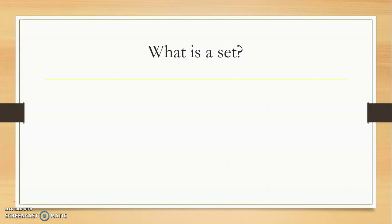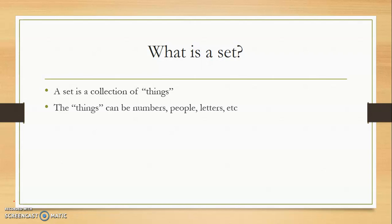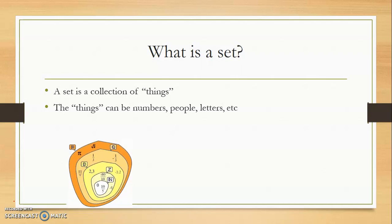One of the first definitions you have to write down is: what is a set? A set is a collection of things. Those things can be numbers, people, letters — it could be anything. For example, you know of the real number system — the real number system is one of the more famous sets we talk about in math.